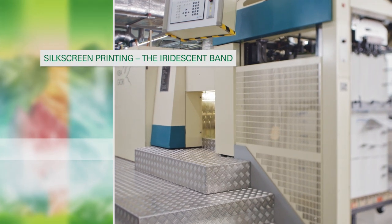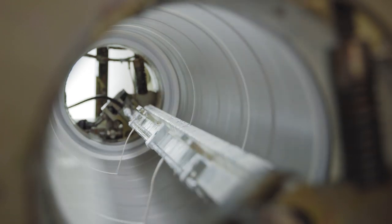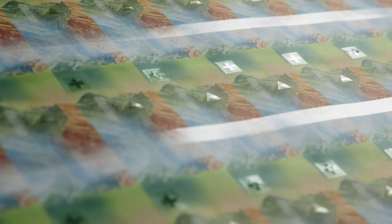During the silk screen printing procedure, an iridescent band is applied to the back of the note. This makes the note more stable.